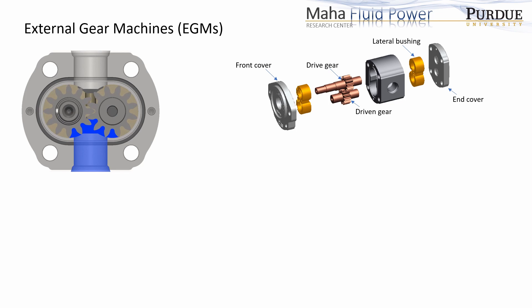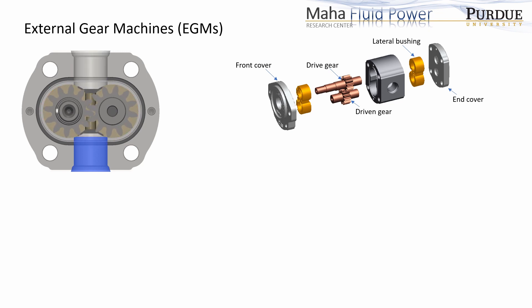External gear machines are positive displacement machines consisting of two mating gears. As the gears rotate, the fluid is transferred from the inlet port to the outlet port through the gears' peripherals. The displacing action is obtained by the gears' meshing process.